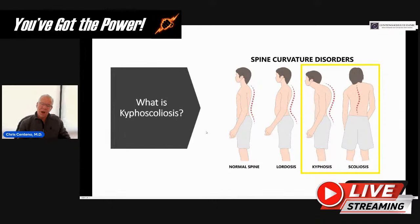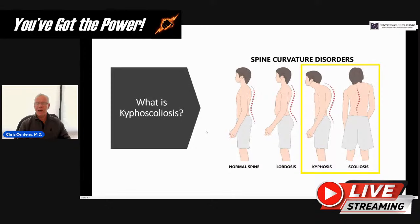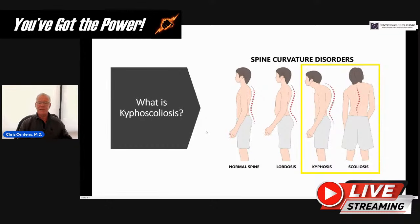We're going to be talking mostly about kyphoscoliosis — that is kyphosis, as you see there on the right, plus scoliosis. Kyphosis is that forward head position. Scoliosis is side bending of the spine. The two together — forward head, rounded shoulders, upper thoracic bent forward posture, and side bending of the spine — is called kyphoscoliosis. That's the most common thing I see these days. The kyphosis piece is just societal, from being hunched over devices all day, and over time you get changes in shape of the bones that are almost irreversible.